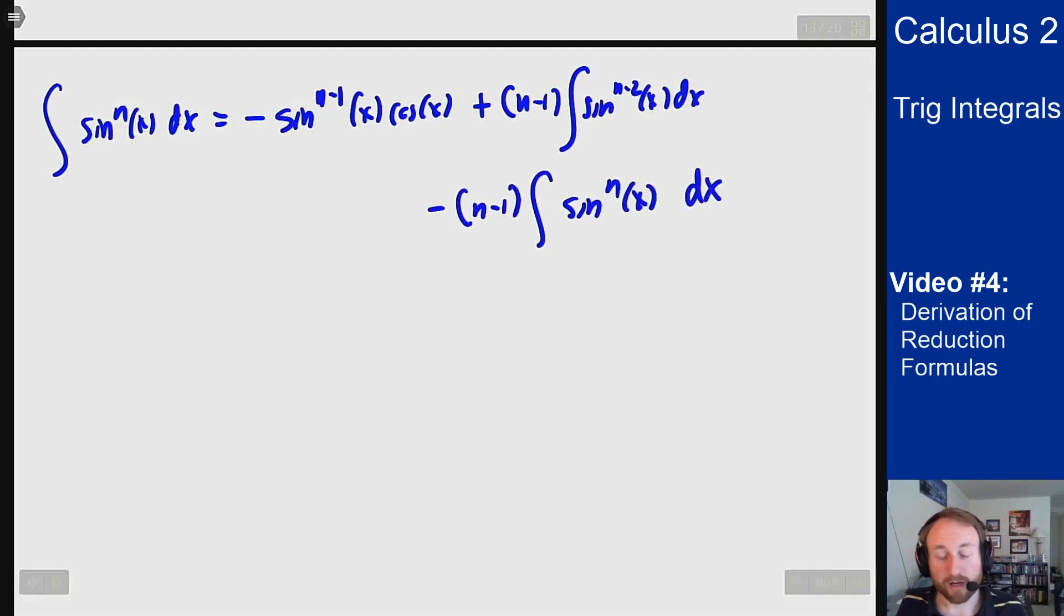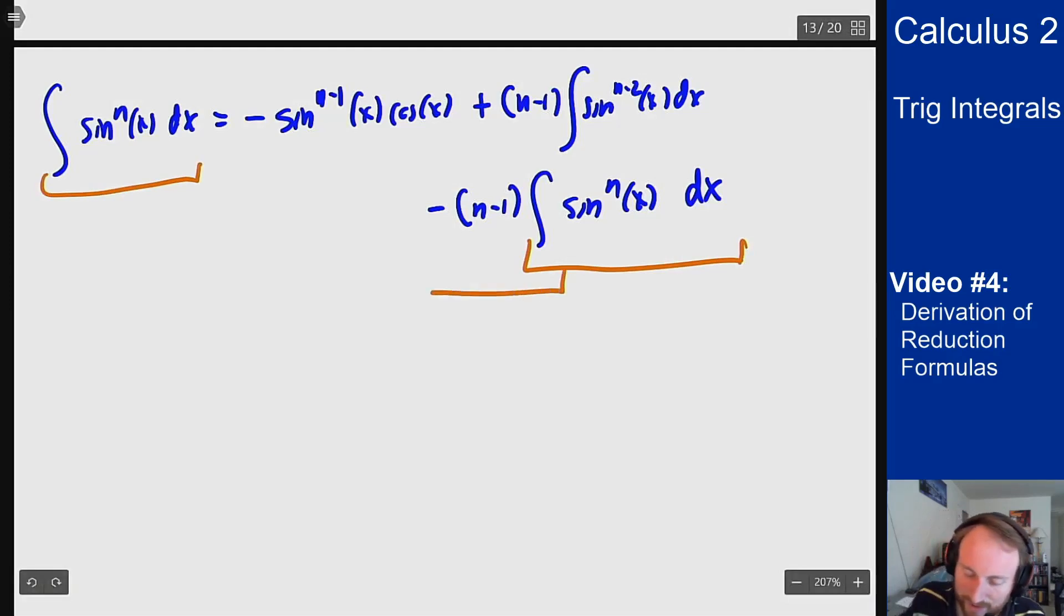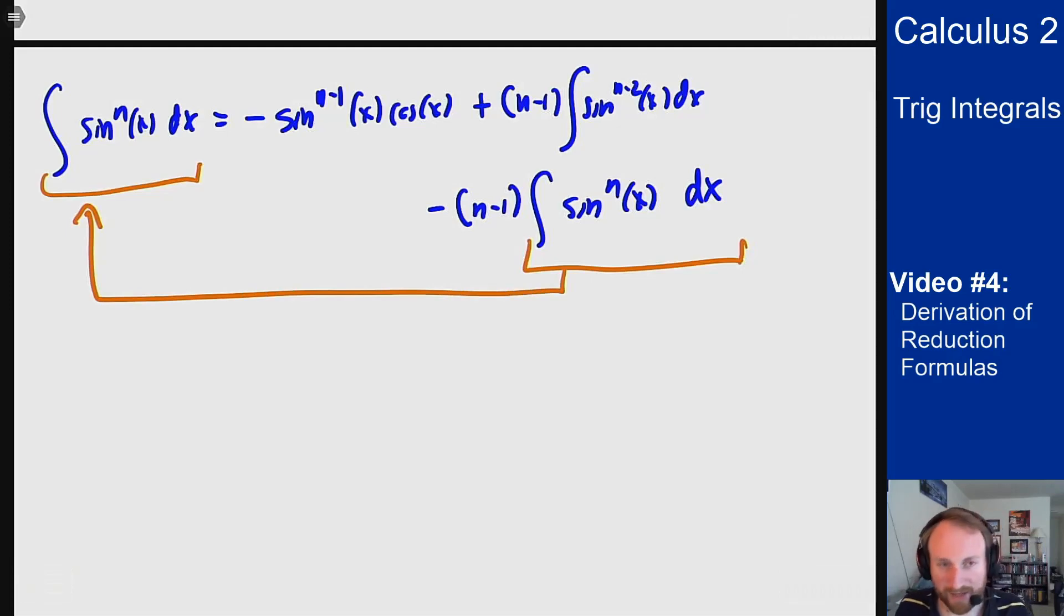And now this might look familiar from some of these circular integration by parts problems we did last section. I have gotten back to the same integral I was trying to solve for. So what I can do is add this over to the other side. I'm adding an n minus 1 to the one that's already there. That'll give me an n on that side.